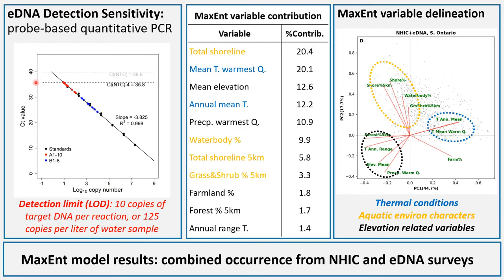Here we quickly show the eDNA detection sensitivity on the left panel, where we estimated the detection limit of our assays to be 10 copies per target eDNA per reaction, or calculated 225 copies of DNA per liter of water sampled. On the Maxent modeling side, the importance table shows the contribution of variables inside our models. Out of 40 different variables, the significant ones and their importance to the model are ranked here.